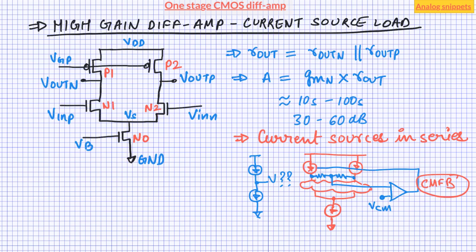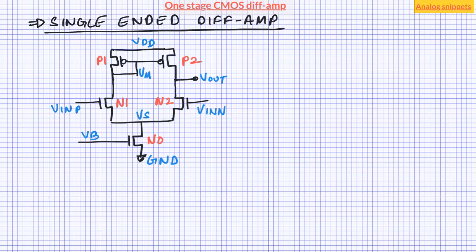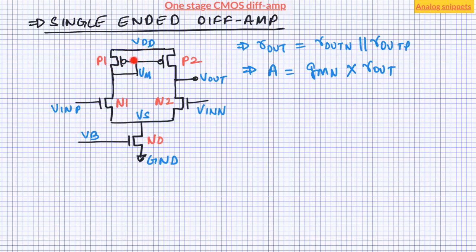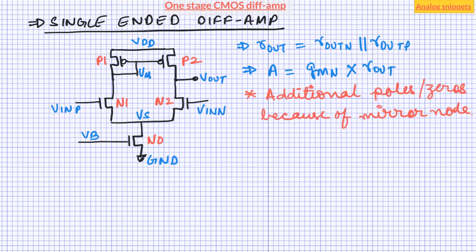All amplifier topologies discussed so far are fully differential. Now let's turn to single-ended amplifier topologies. Probably the best-known single-ended differential amplifier topology is the one with current mirror load. Its gain is the same as the fully differential topology — not half, because the other branch contributes to gain by changing the gate voltage Vm. However, this also means there is an additional pole at the mirror node Vm. Single-ended topologies do not need explicit common-mode feedback because they are usually embedded inside a negative feedback system which defines the output.